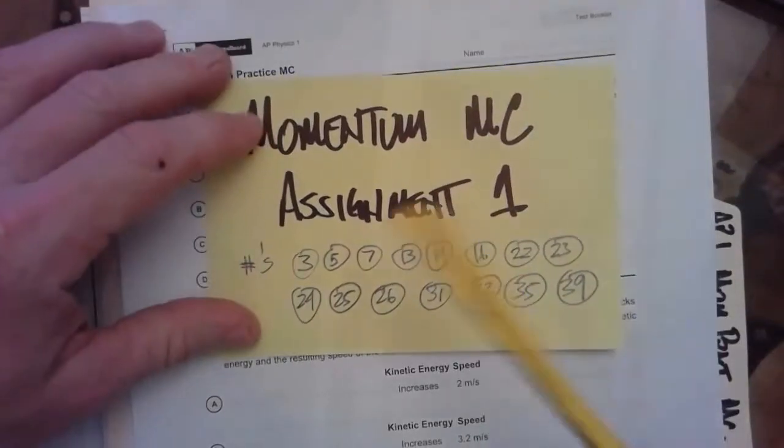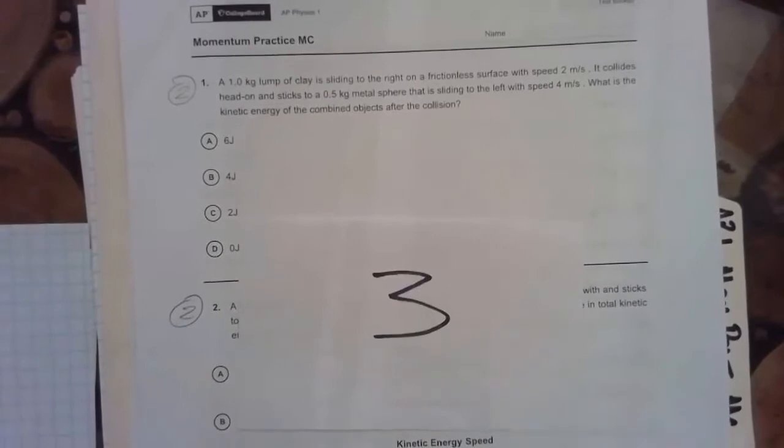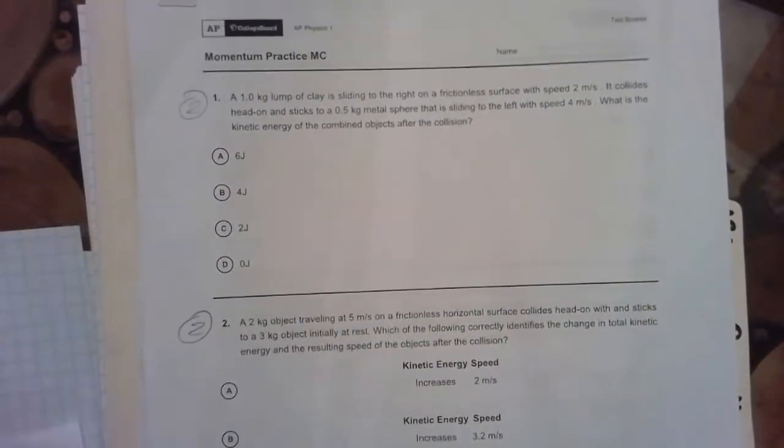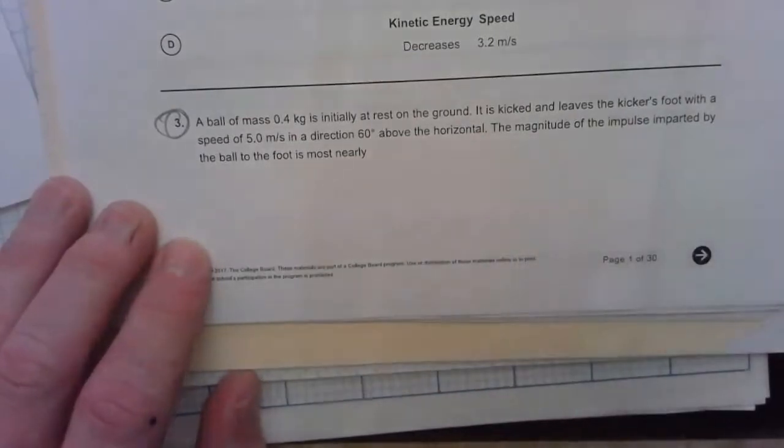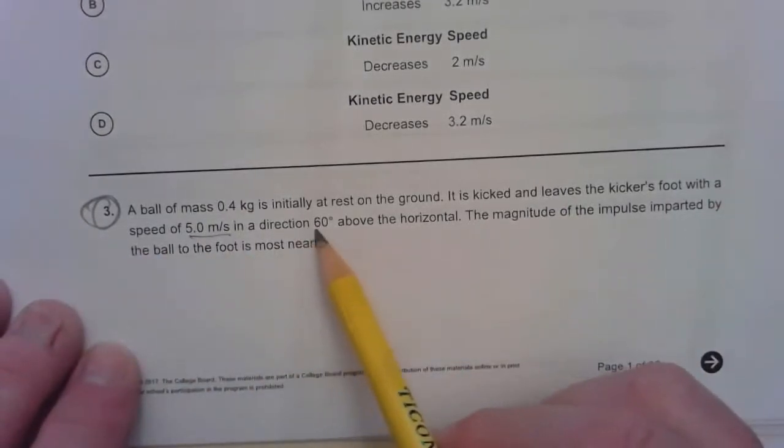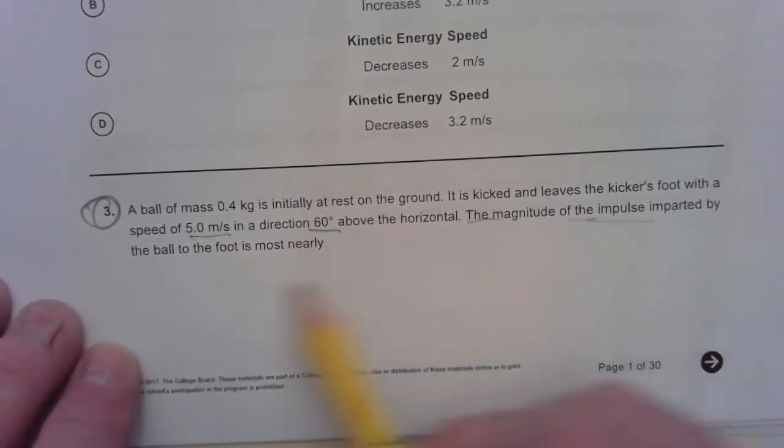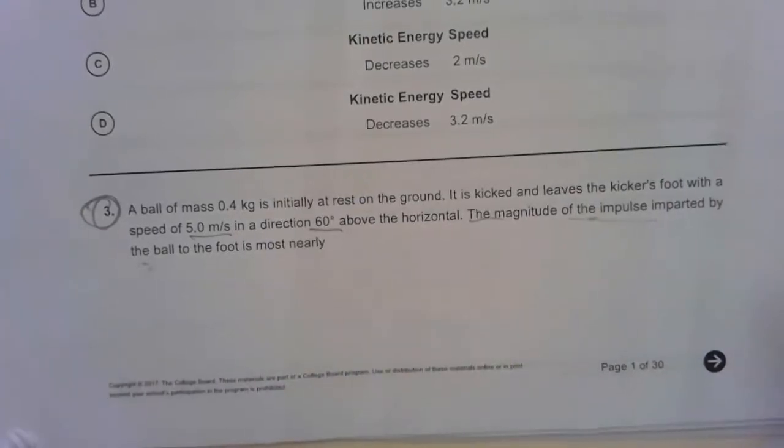Okay, we're going to go through the first set of problems out of this momentum packet, and we start with number three. So number three is down here at the bottom, and it says a ball of mass four kilograms is initially at rest on the ground. It's kicked and leaves the kicker's foot with a speed of five meters per second in a direction that's 60 degrees above the horizontal. The magnitude of the impulse imparted to the ball by the ball to the foot.